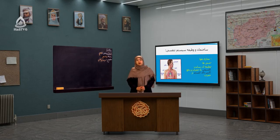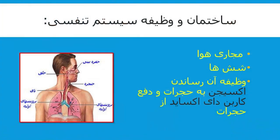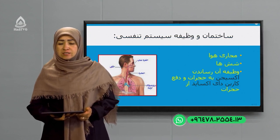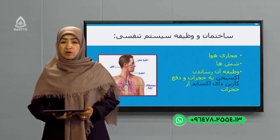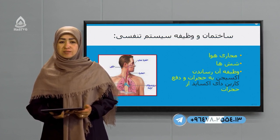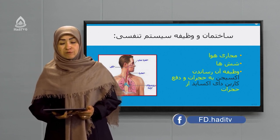Ma o shuma yak mabhas jadid ra taht anwane sisteme tanafusie shuru mekonim. Ma goftim mojudat chandeen hujrawi dar sakhtare badanshan daray chandeen system hast. Emruz sisteme tanafusie ra ba yek digar mekhanim. In mojudat chandeen hujrawi daray sisteme tanafusi, sisteme itraahiye, sisteme gardesh mawad, sisteme hazima wa gheyra hastand. Dar darshaaye guzashta shuma sisteme hazima ra ba tafsil khandid.